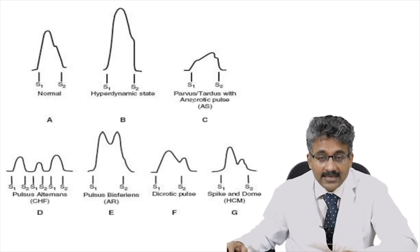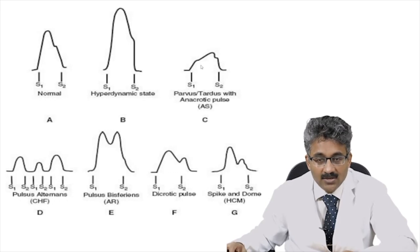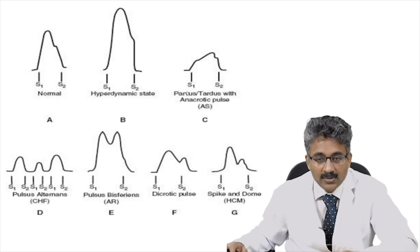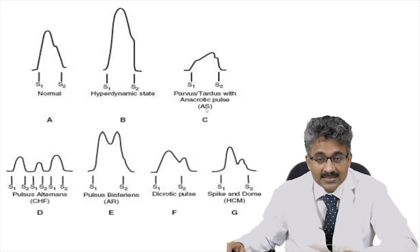In the next diagram, the height of the pulse is less and the peaking is delayed — this is pulsus parvus et tardus, also known as anacrotic pulse. Pulsus parvus means low volume and tardus means late peaking. Pulsus parvus et tardus is seen in aortic stenosis and is also called the anacrotic pulse.